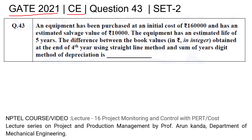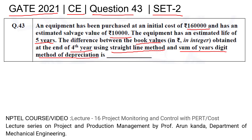GATE 2021 Civil Engineering question number 43, Set 2. An equipment has been purchased at an initial cost of 160,000 and has an estimated salvage value of 10,000. The equipment has an estimated life of five years. We need to find the difference between the book value at the end of the fourth year using the straight line method and the sum of years digit method of depreciation. This is a question from project management economics on equipment depreciation.